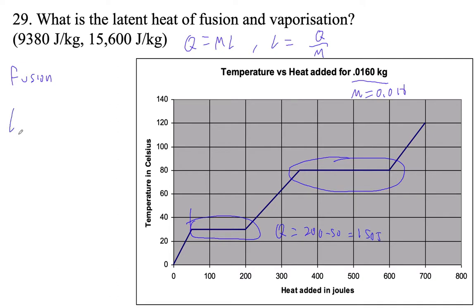So latent heat of fusion is going to be 150 joules divided by 0.016. And that's 9,375, or 9,380 joules per kilogram.